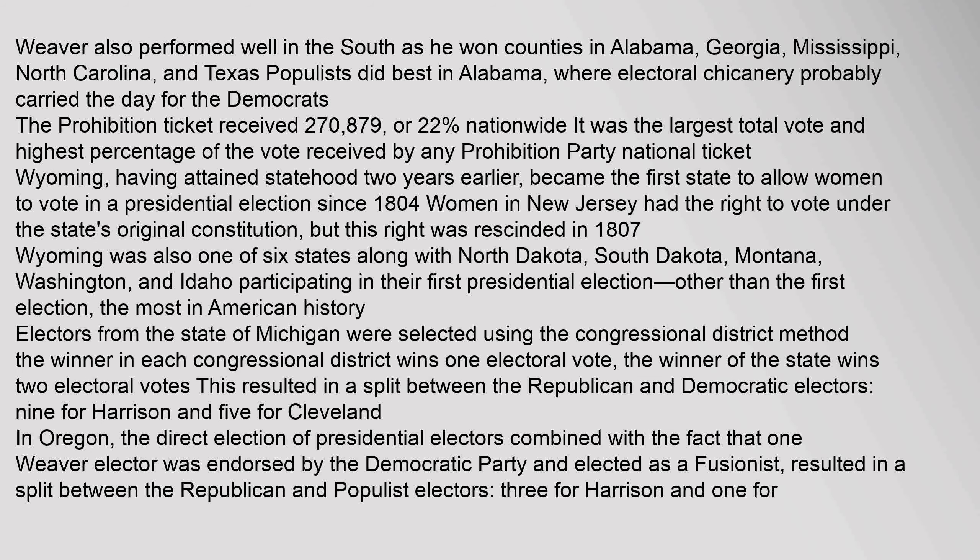Weaver also performed well in the South, winning counties in Alabama, Georgia, Mississippi, North Carolina, and Texas. Populists did best in Alabama, where electoral chicanery probably carried the day for the Democrats. The Prohibition ticket received 270,879 votes, or 2.2% nationwide — the largest total vote and highest percentage ever received by any Prohibition Party national ticket. Wyoming, having attained statehood two years earlier, became the first state to allow women to vote in a presidential election since 1804. Wyoming was also one of six states — along with North Dakota, South Dakota, Montana, Washington, and Idaho — participating in their first presidential election.